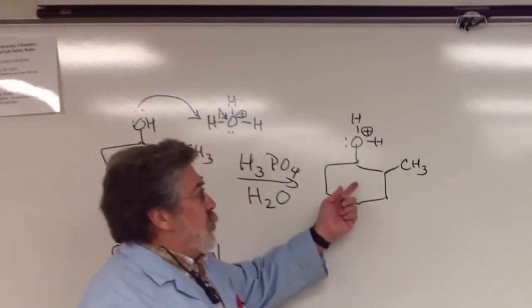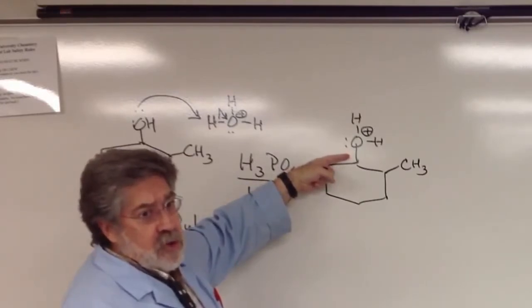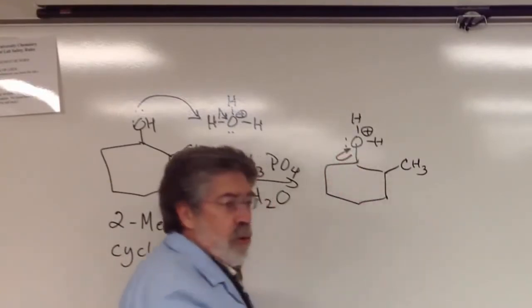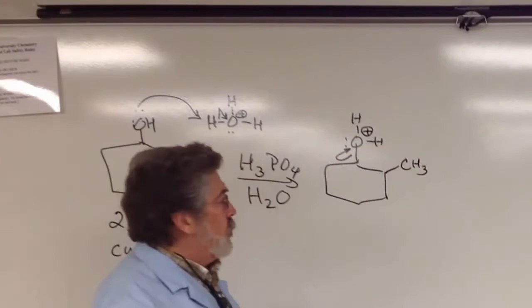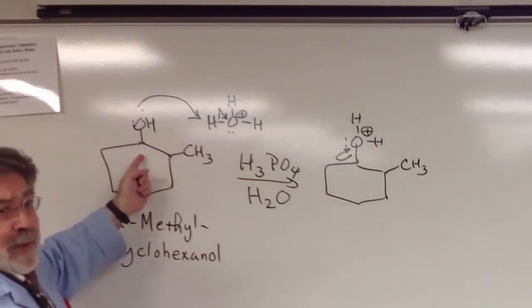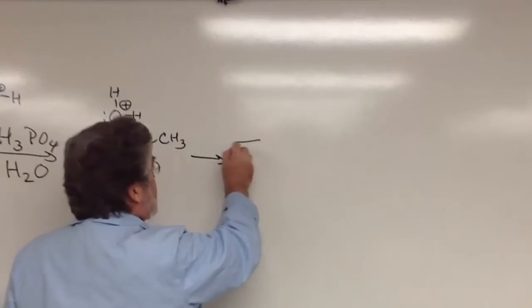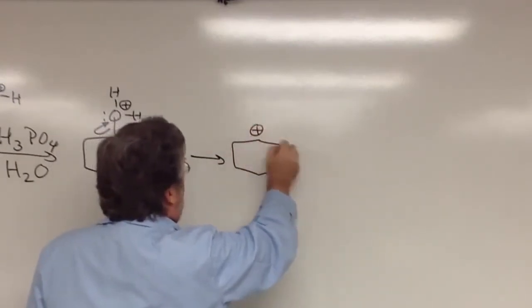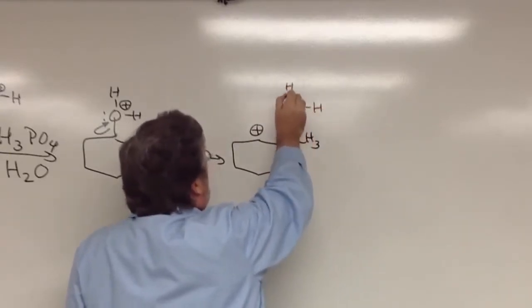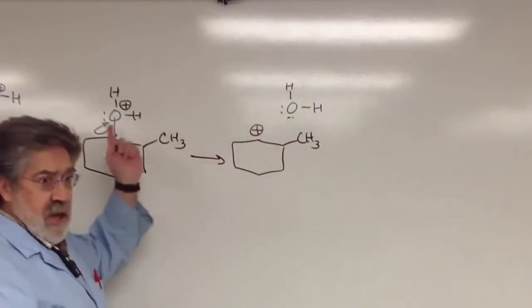Now, what happens at this point is this oxygen is really tugging on these electrons that are holding it on to the carbon of the cyclohexane ring. And that means it will fall off. It is a good leaving group. It's a good leaving group as water. It's not a good leaving group as an OH, but as water, it is a good leaving group. And so, it falls off, leaves a carbocation behind. And of course, water is generated in this step as it leaves.